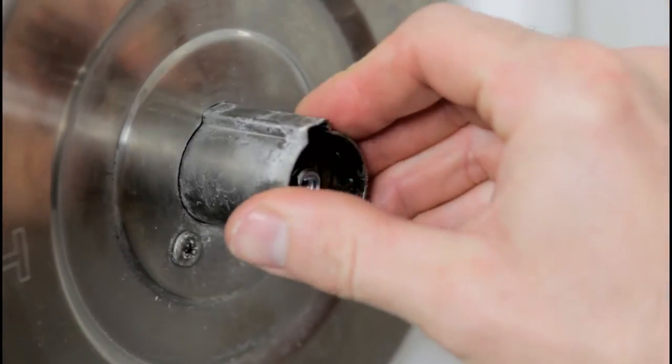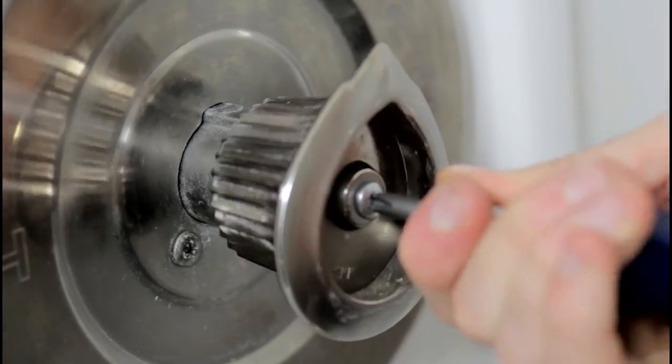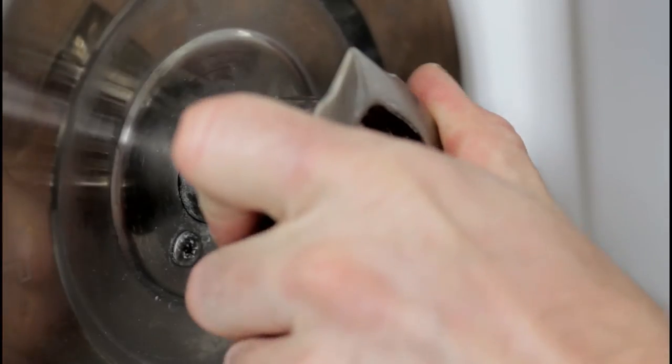Don't forget to reinsert that sleeve. Then place the faucet handle back on and screw everything back together nice and tight. Check to make sure that the operation is nice and smooth.